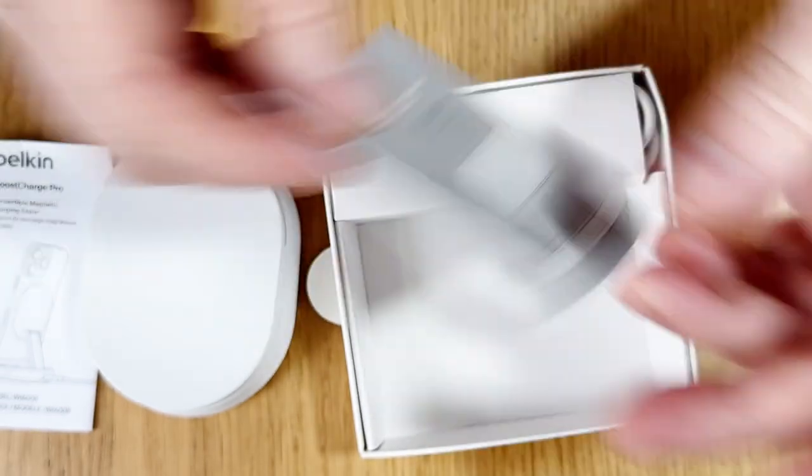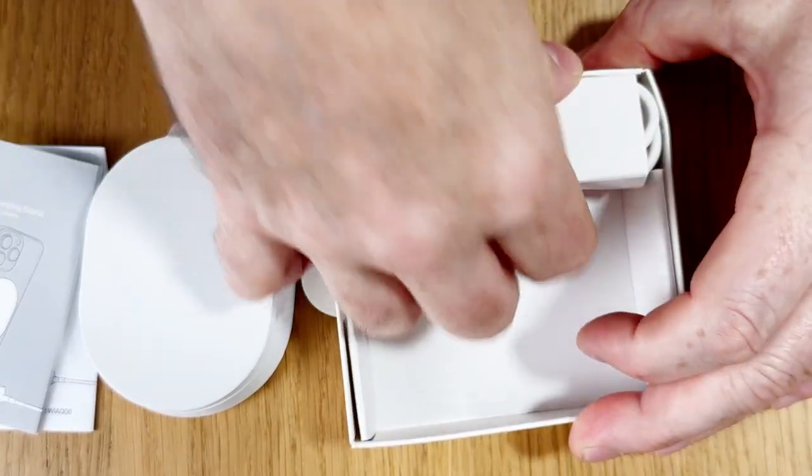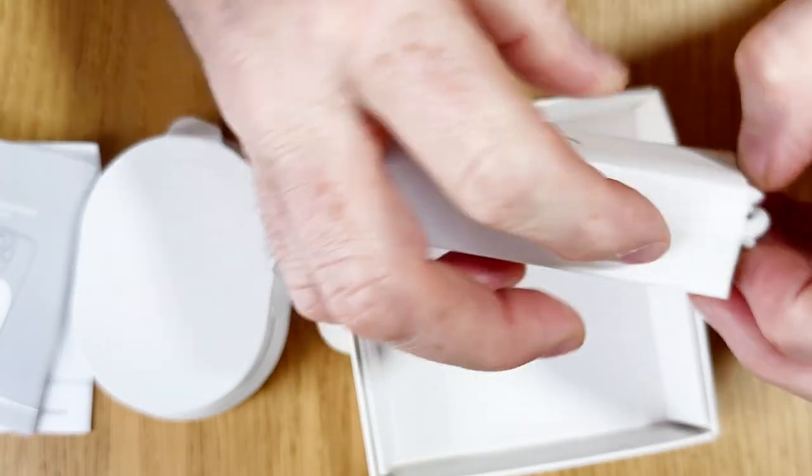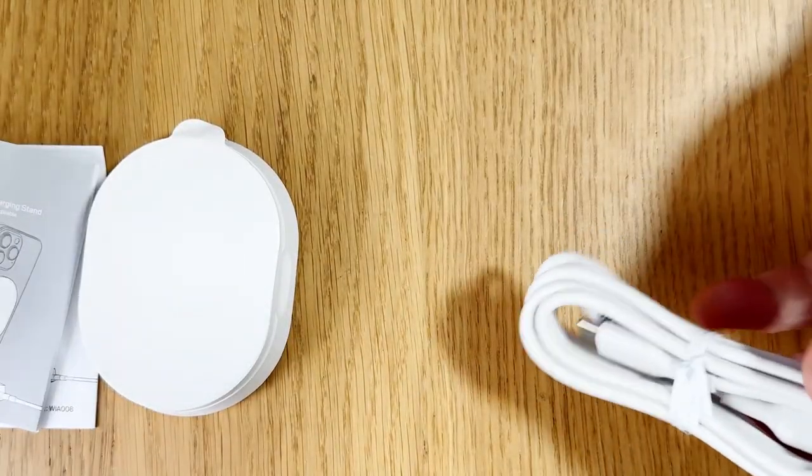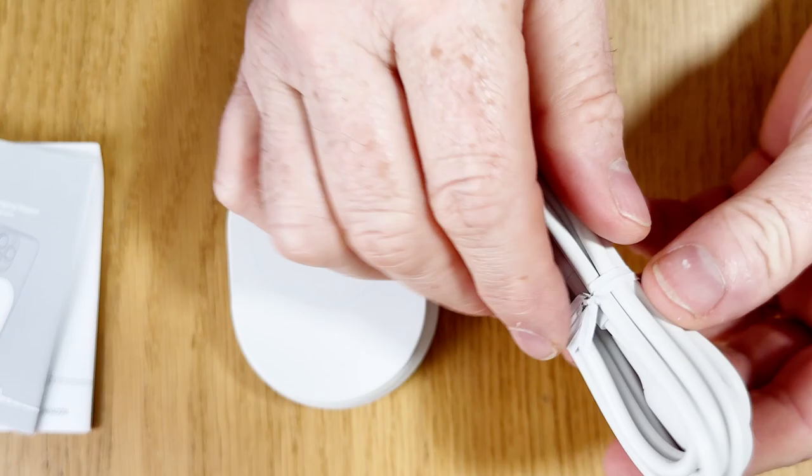On the other side, what have we got? Nothing else. So in the box we have a USB-C cable. This is the one I went and bought. I didn't get it with a charger because I've already got my charger.